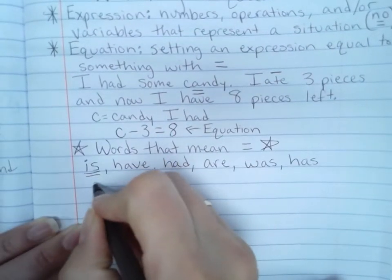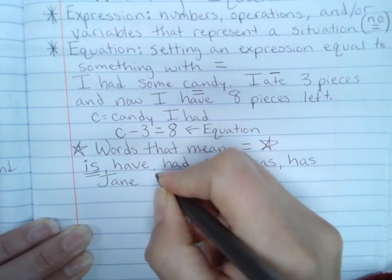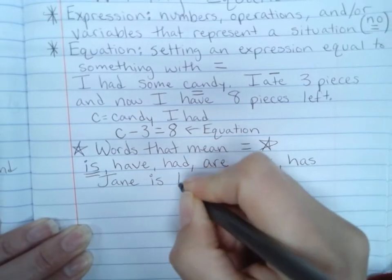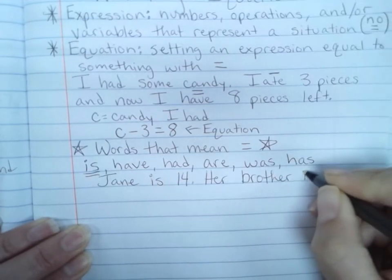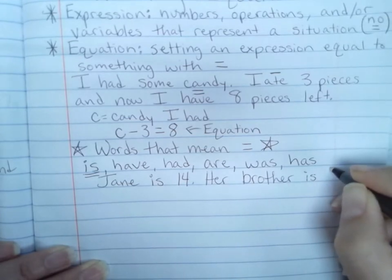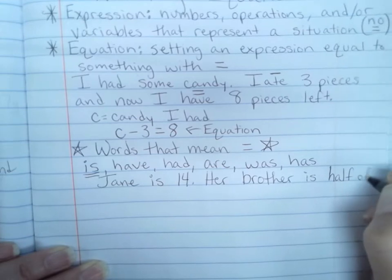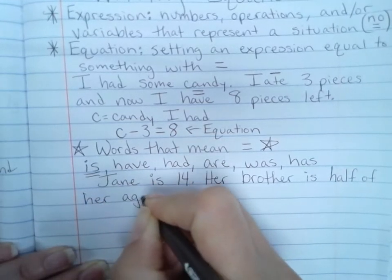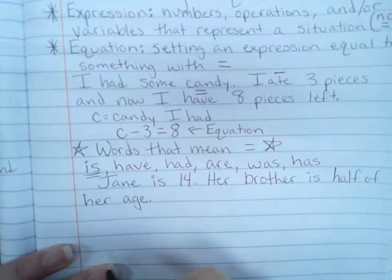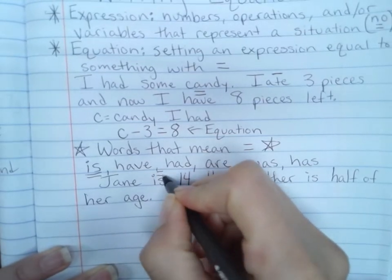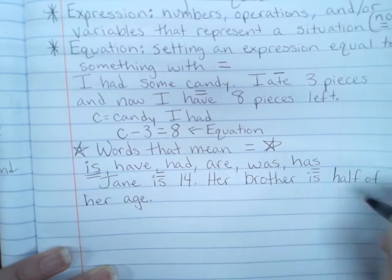Okay, let's do another example of writing an equation. Jane is 14. Her brother is half her age. Okay, so here, what is the thing we know? We know Jane is 14. There's an equals word. So Jane is 14. Her brother is, so here her brother is half of her age.